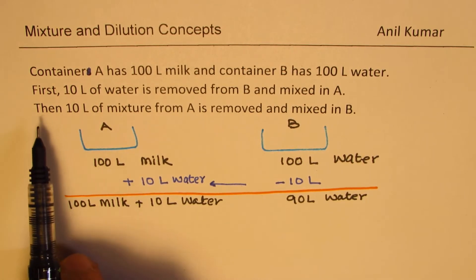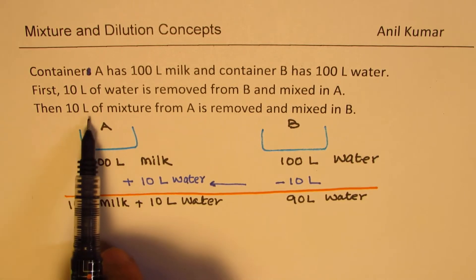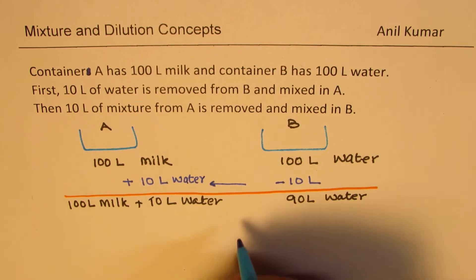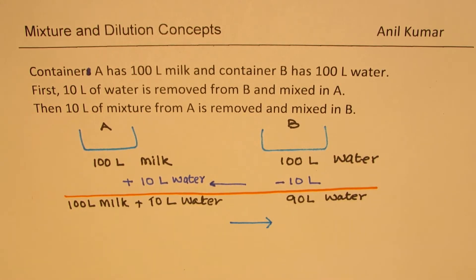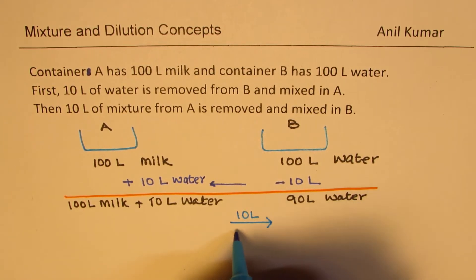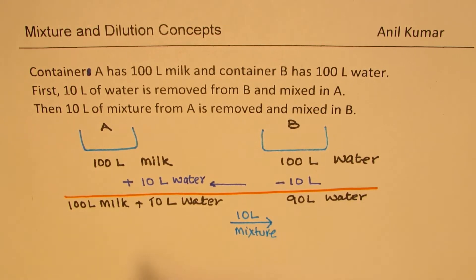Now it says then 10 litres of mixture from A is removed and mixed in B. So now we are doing this operation and providing 10 litres of mixture. So we have now 10 litres of mixture. Clearly we have milk and water. We are assuming they have been mixed properly.